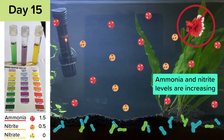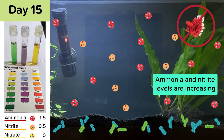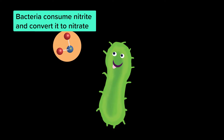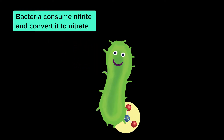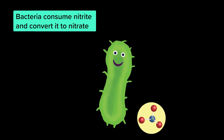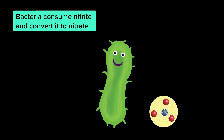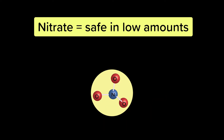By day 15, ammonia and nitrite levels are increasing. When bacteria consume nitrite, they produce a byproduct called nitrate. Nitrate is safe for fish in low amounts.